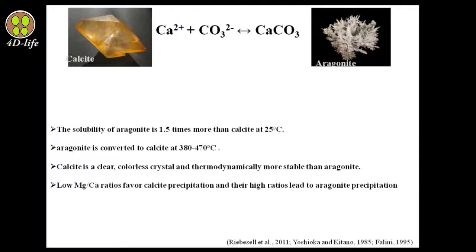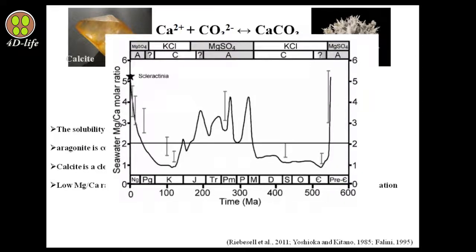A low magnesium to calcium ratio favors calcite precipitation, and a high magnesium to calcium ratio leads to aragonite precipitation. During times when the magnesium to calcium ratio decreases below 2, carbonate structures are created in calcite form. And above this threshold, carbonate structures form as aragonite.